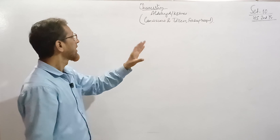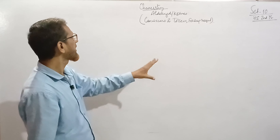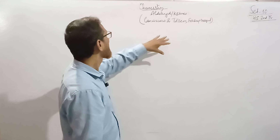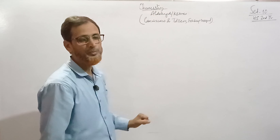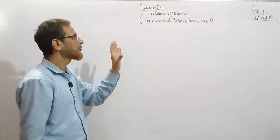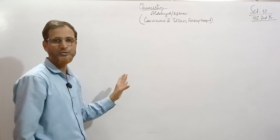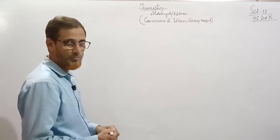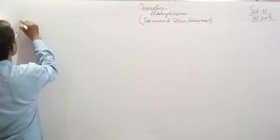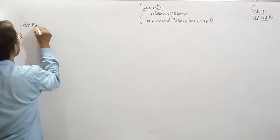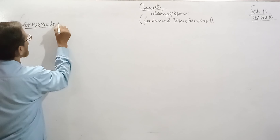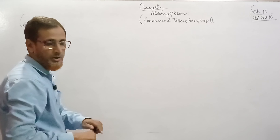This is Practice Set 10 with entrance exam solutions specifically on Cannizzaro reaction, Tollens reagent, and Fehling reagent. The chapter is Aldehydes and Ketones, which is very important from an entrance exam point of view as well as for class board exams. Let me first tell you something about the Cannizzaro reaction.